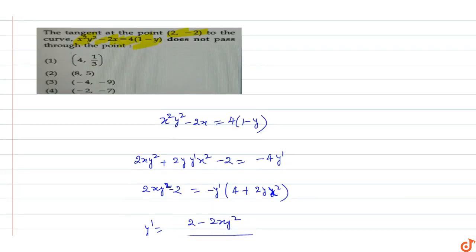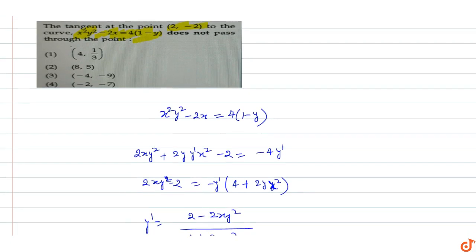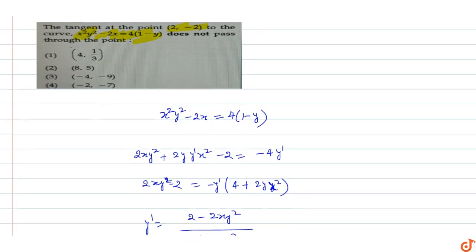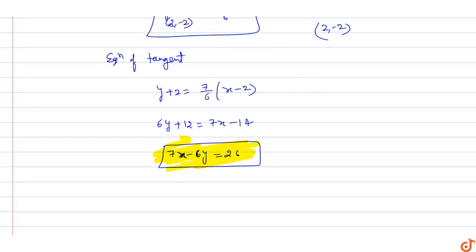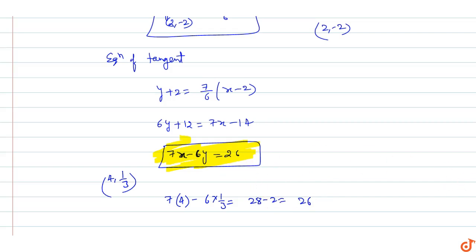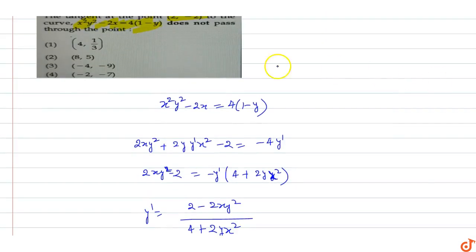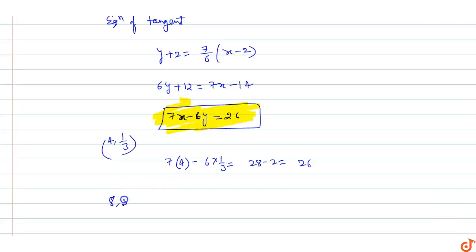The tangent at point (2, -2) to this curve does not pass through which point? Let's check the first candidate point (8, 5): 7(8) - 6(5) = 56 - 30 = 26. So (8, 5) satisfies the tangent equation and lies on it.